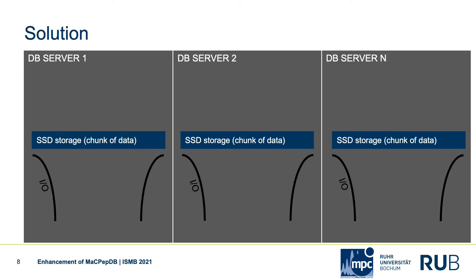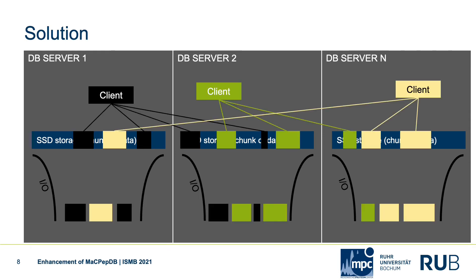The solution is quite simple: we rebuild MacPeptiDB on a distributed database. This has multiple advantages. First, each server can be smaller in hardware than the original one. Second, each server needs to contain only a small chunk of the overall data, and the total read performance will increase with each server added. Each client will then read data from multiple servers in parallel, allowing the distribution of read operations across multiple servers.